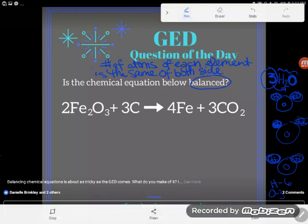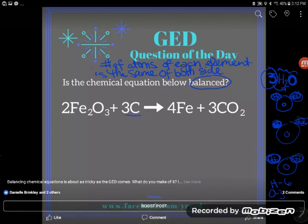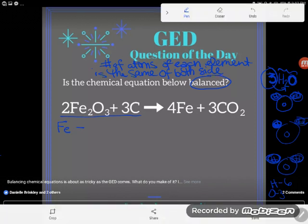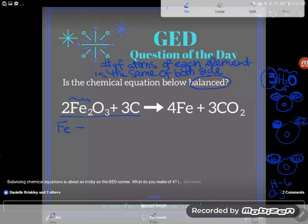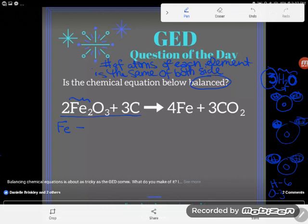Okay, so let's first count the atoms on the left-hand side in the reactants. So the first element that I see is iron. Now you don't need to know that Fe stands for iron, but I do know that these two letters are one element because we just capitalize the first letter of an element.